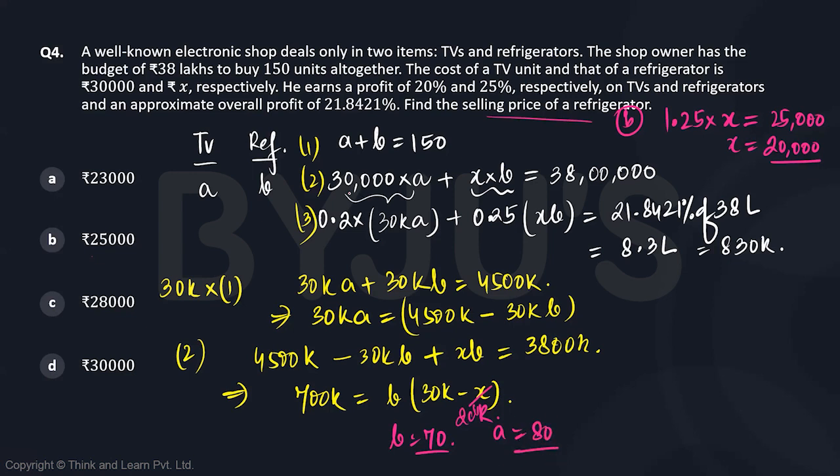Let's verify by substituting into the second equation. It should total 38 lakhs. So 30,000 times 80 plus 20,000 times 70 equals 2,400,000 plus 1,400,000, which equals 3,800,000. This matches the right-hand side.